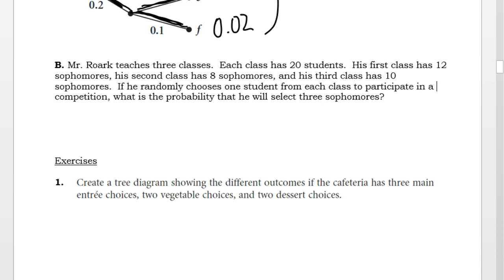So I have three independent events. I'm going to need three separate probabilities, multiply them together.